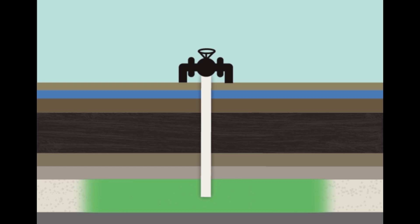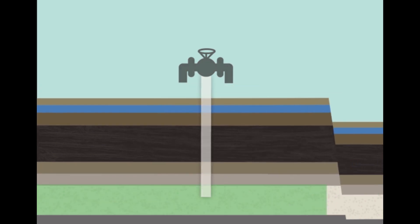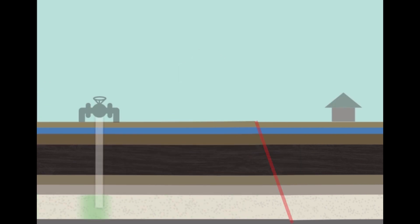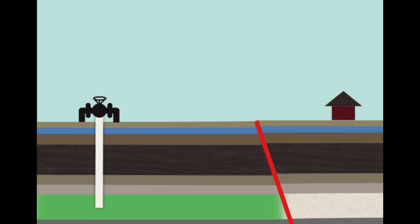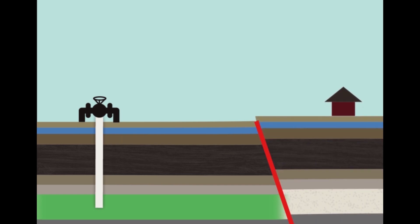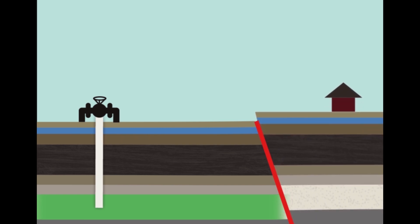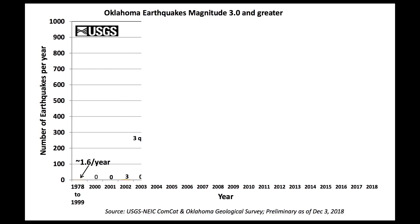As wastewater fills the formation, the internal pressure changes. Injection wells are purposely located far away from faults; however, a recent study found that the pressure increase can reach up to 10 kilometers, or six miles away, possibly reaching a fault. If this happens, the pressure increase counteracts the pressures that are already holding the fault together. Now the fault could slip and cause an earthquake.